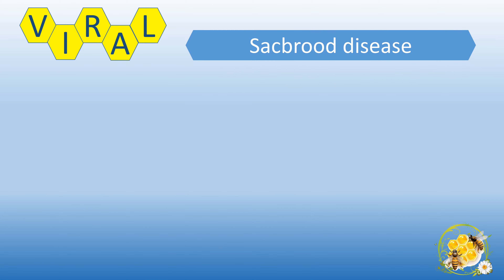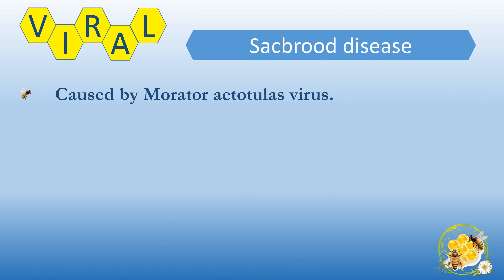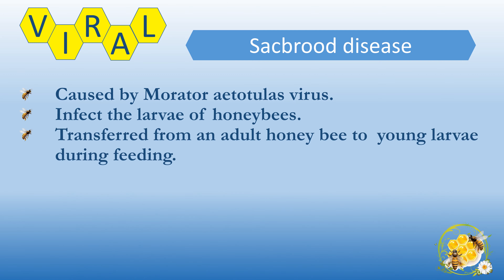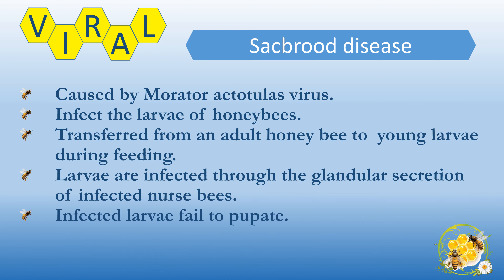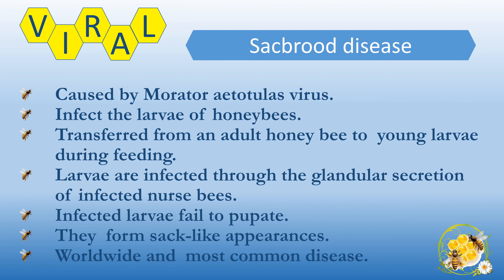Viral Disease - Sacbrood Disease: Sacbrood Disease is an infectious disease caused by the Morator atatullus virus. This disease infects the larvae of honeybee and is transferred from adult honeybees to young larvae during feeding. Larvae are infected through the glandular secretion of infected nurse bees. In this condition, infected larvae fail to pupate and form a sac-like appearance, which is the characteristic of this disease.